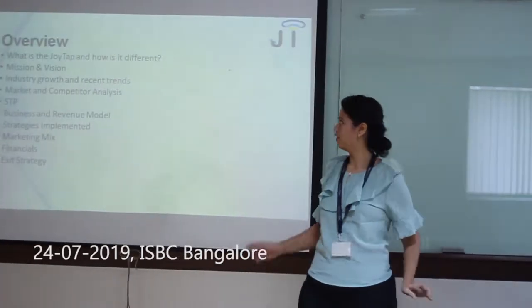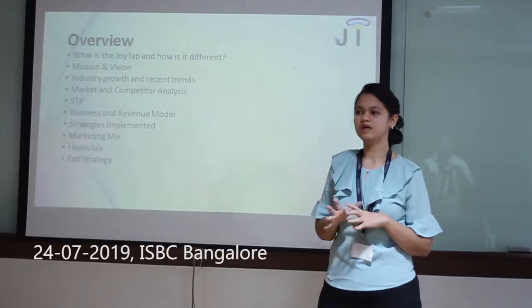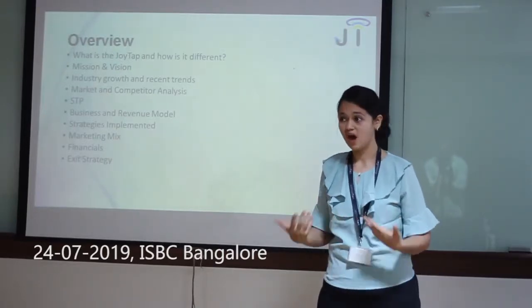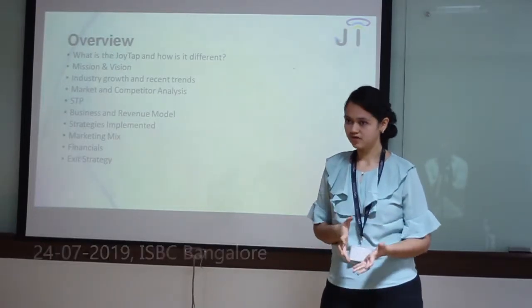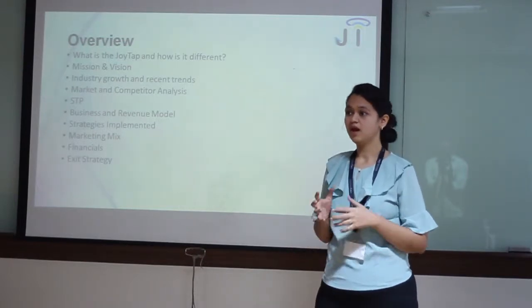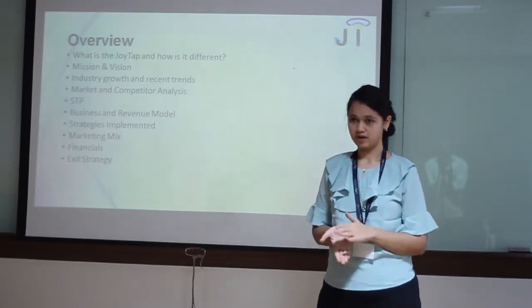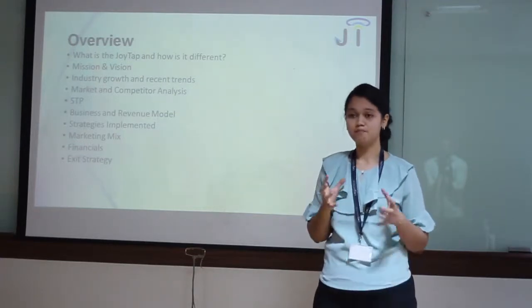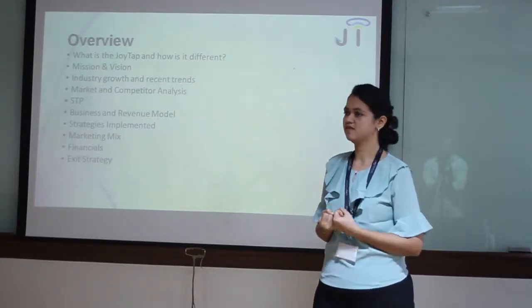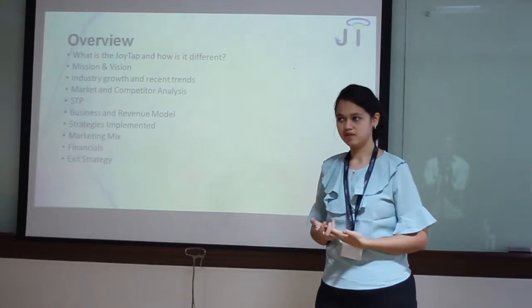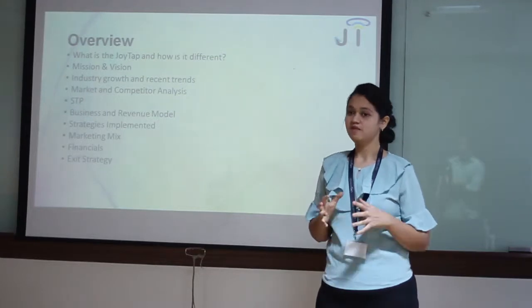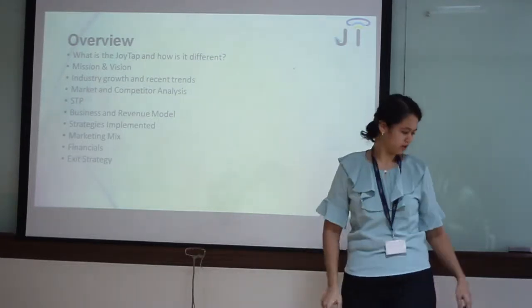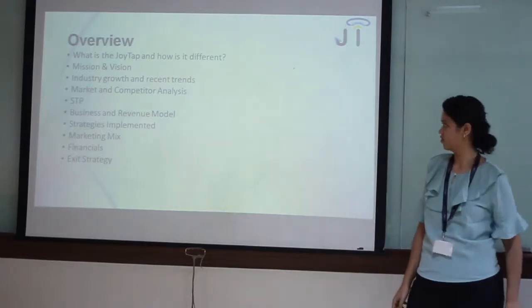The overview of the entire business plan: we will be covering a lot of aspects starting from what is JoyTab, how is it different, going to the industry structure, going to the segments of market, understanding our marketing plan — that is our marketing mix, our STP — followed by our major core elements, that is business and revenue models. We then go ahead to the financials. We will also brief on the exit strategy, following our final options.